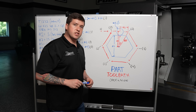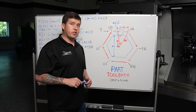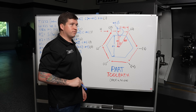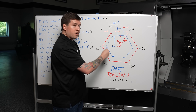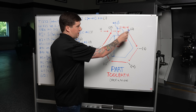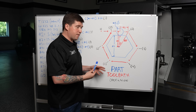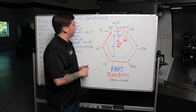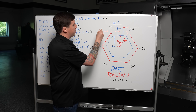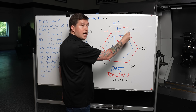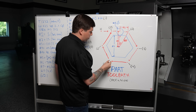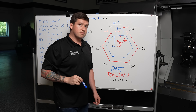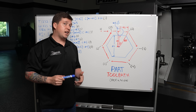With those five pieces of information, what your machine is going to do with this program is wrap it out into space. This blue hexagon right here is your part. This red hexagon right here is your tool path. Your machine will wrap out to a point in space that is safe, then it will feed across the top of the first flat, go around, do the entire hexagon, and then move out. That's all you need to know to use this macro.